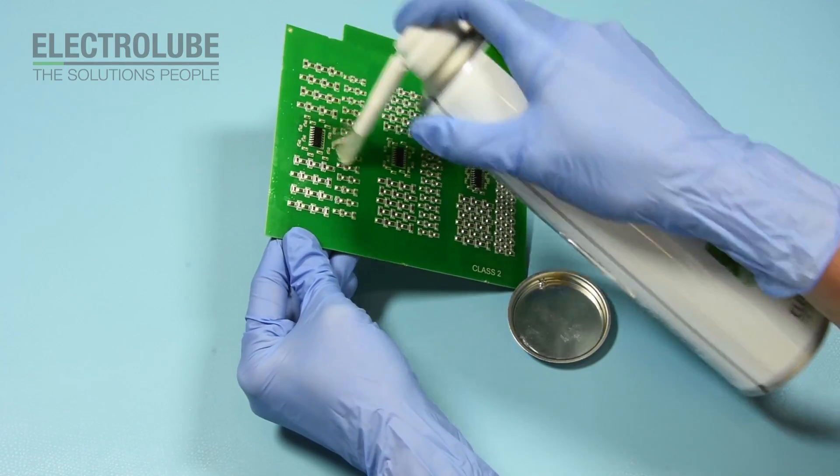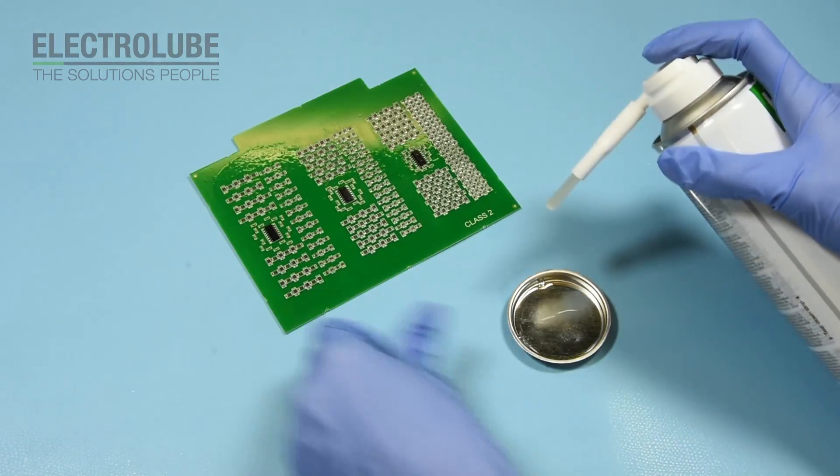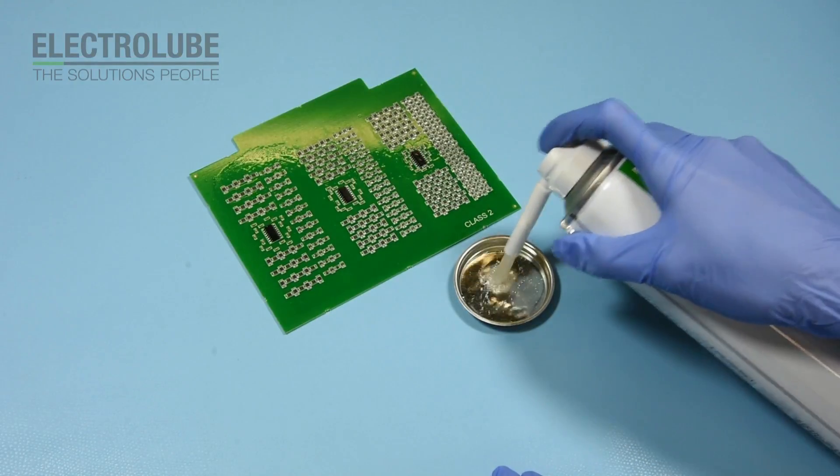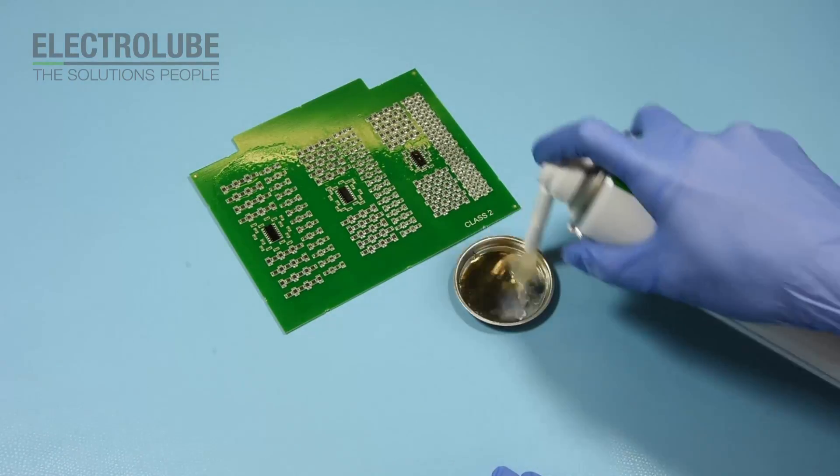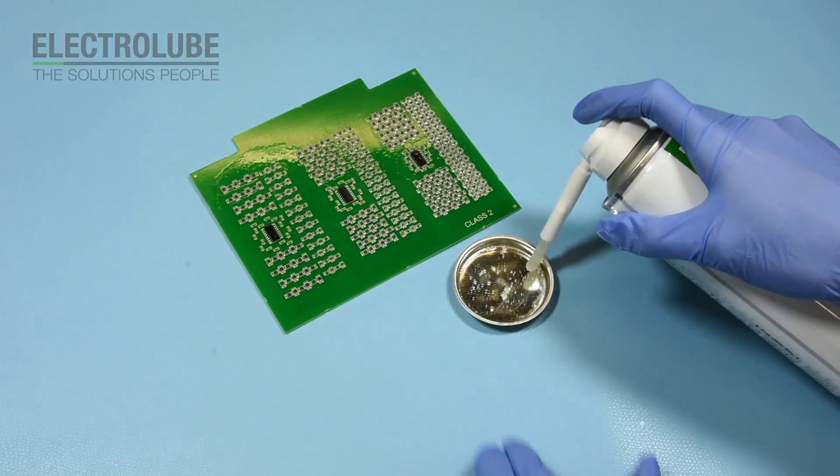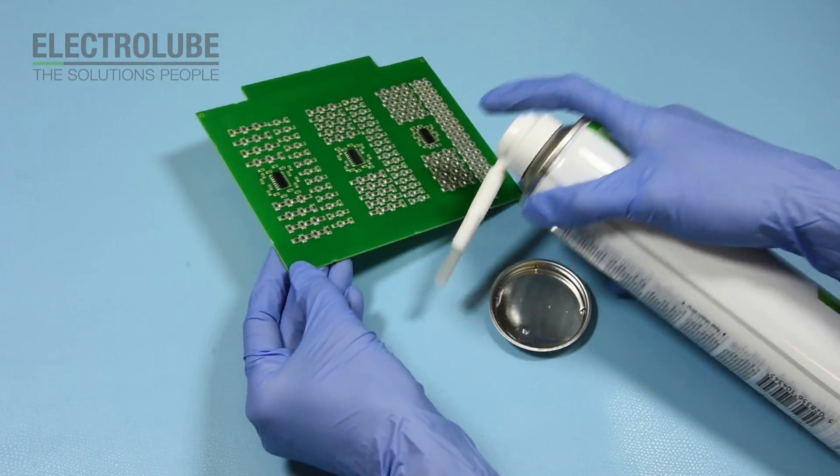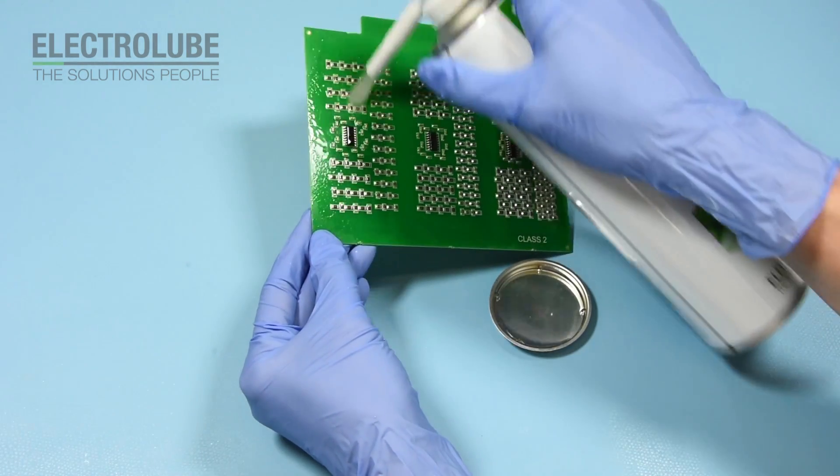Originally designed to replace ozone depleting solvents such as CFC 113, it exhibits enhanced cleaning performance and fast evaporation rates, easily giving mill standard cleanliness.